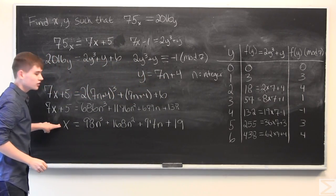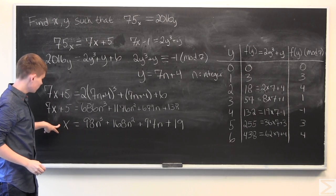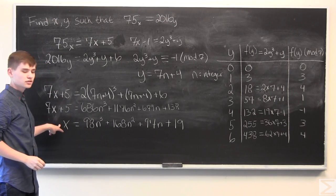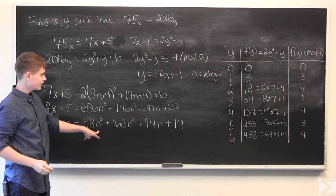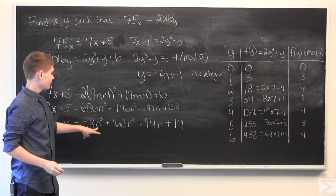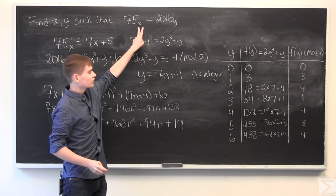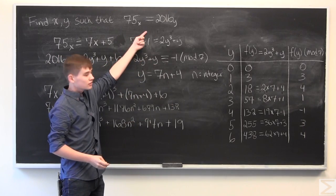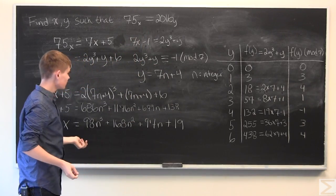Okay, and this is the expression to find x. And so, since n is just any integer, we can actually find infinitely many pairs of x and y such that this expression is true. So, we'll just pick 1.